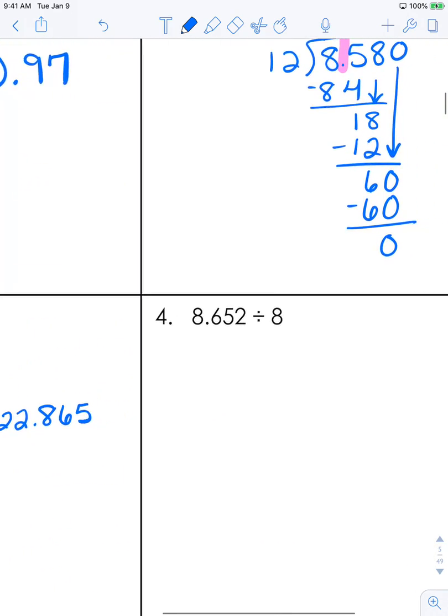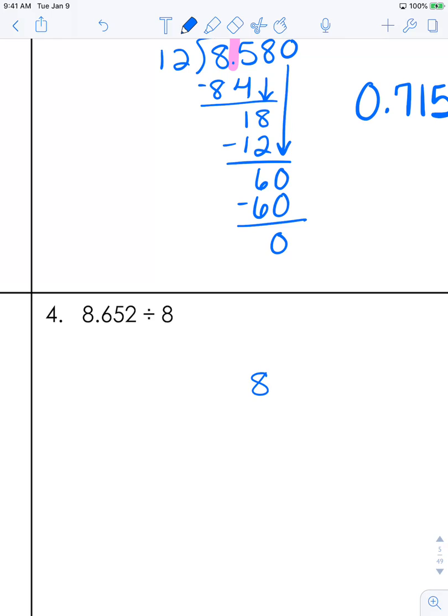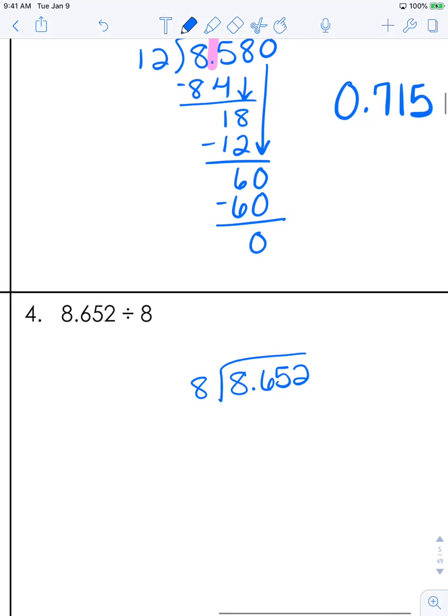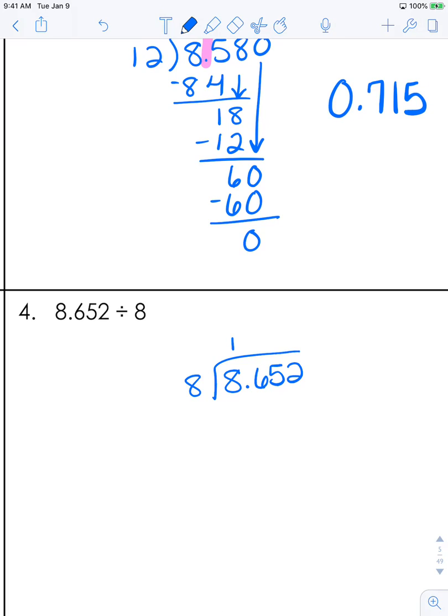Last one: 8.652 divided by 8. 8 goes into 8 of course one time. We're going to subtract and bring down. I always see confusion here. If there's a 6 and you've brought the number down already, no, 8 cannot go in there.